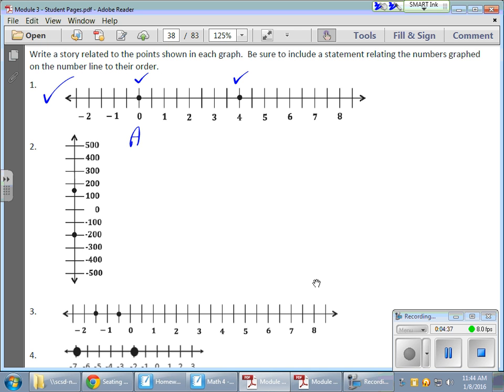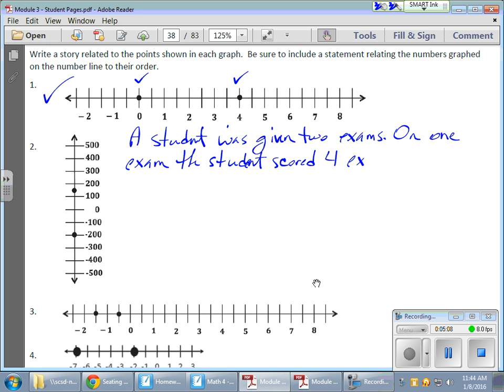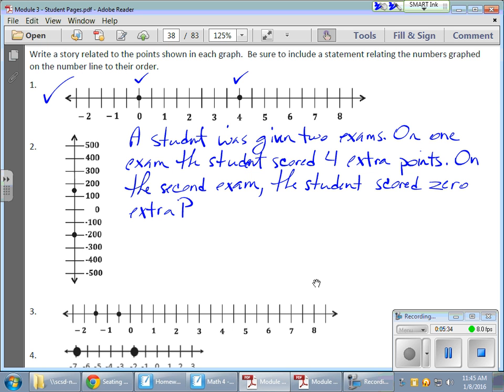So let's just say, a student was given two exams. On one exam, the student scored four extra points. On the second exam, the student scored zero extra points.